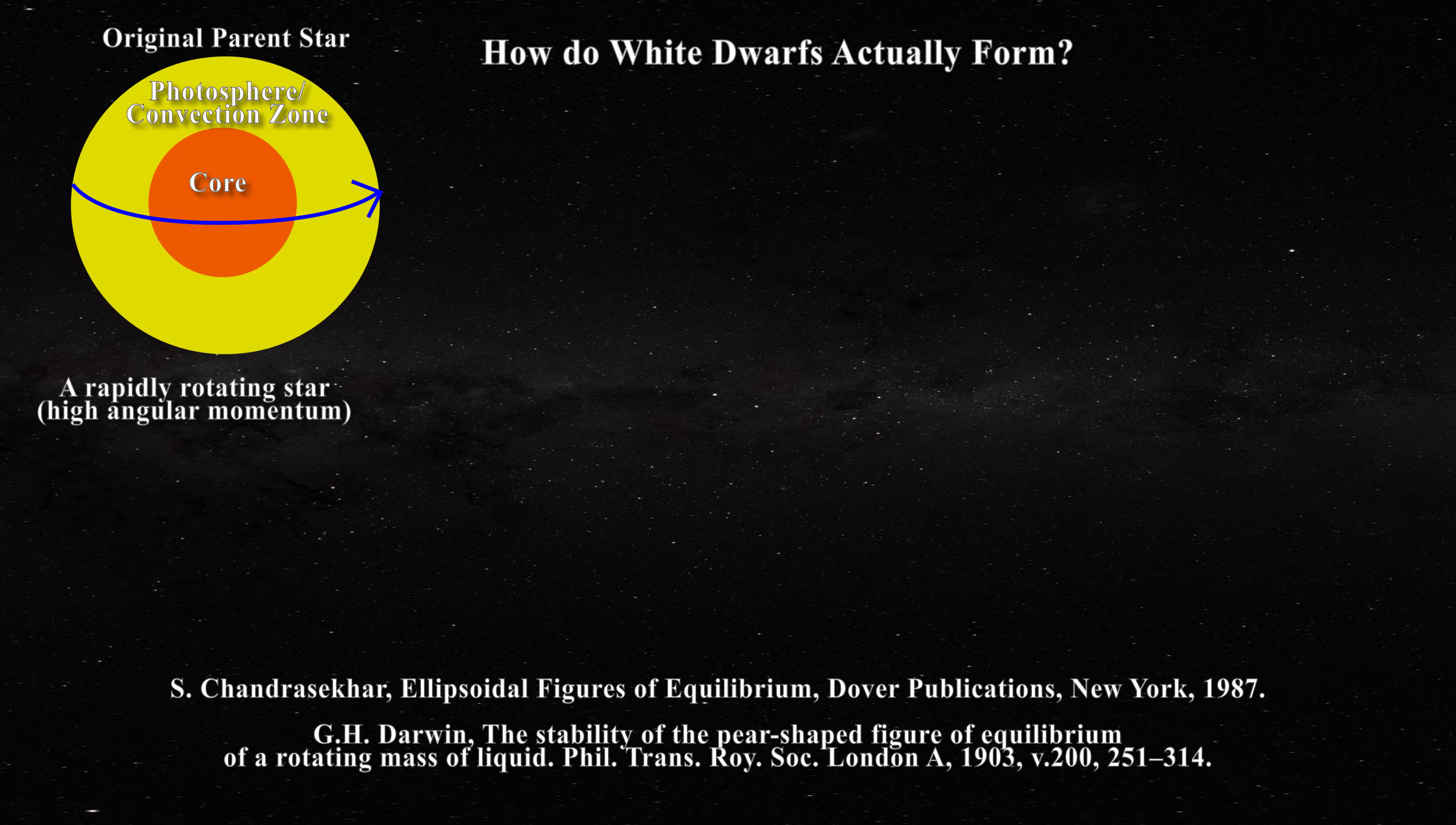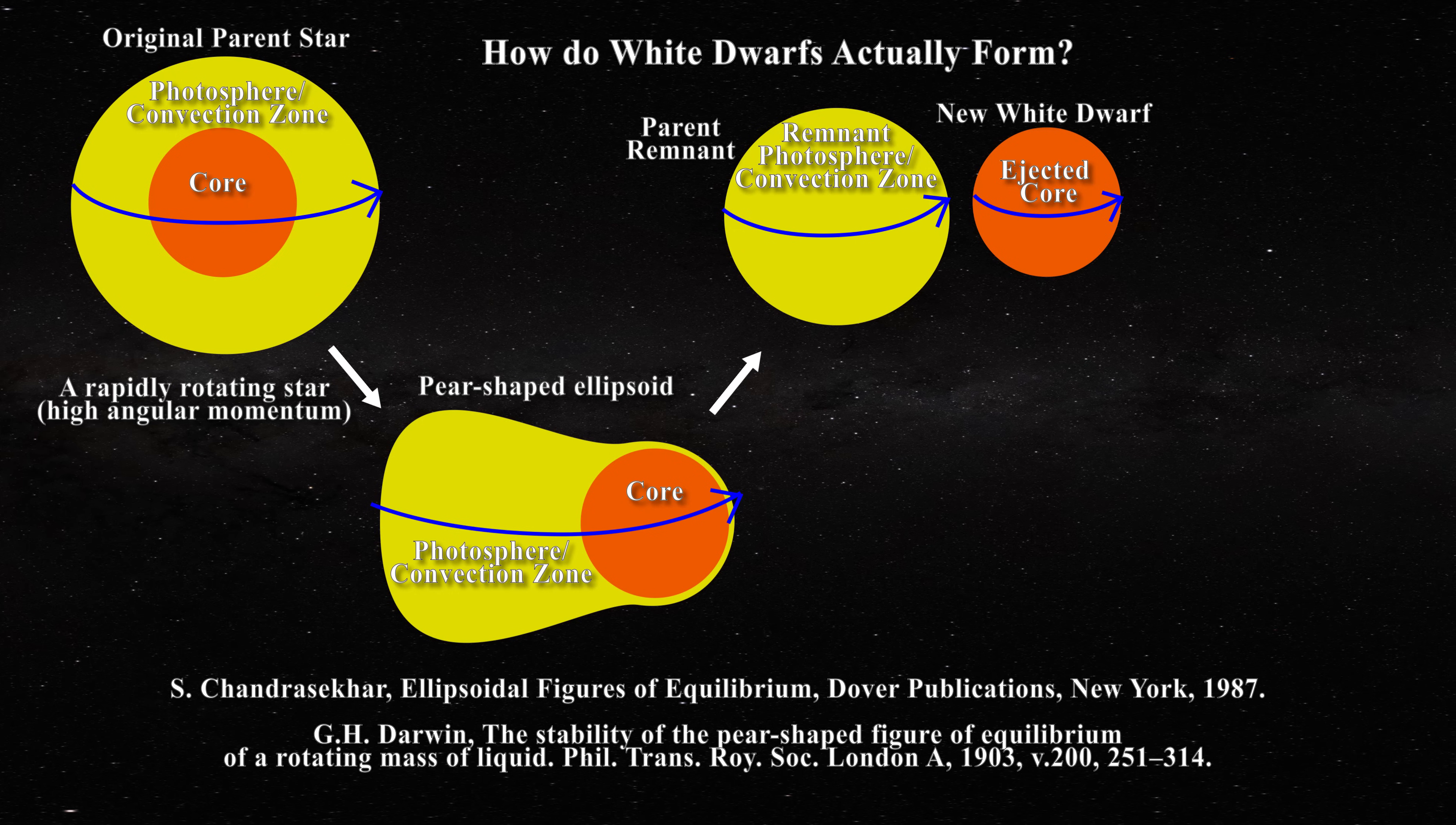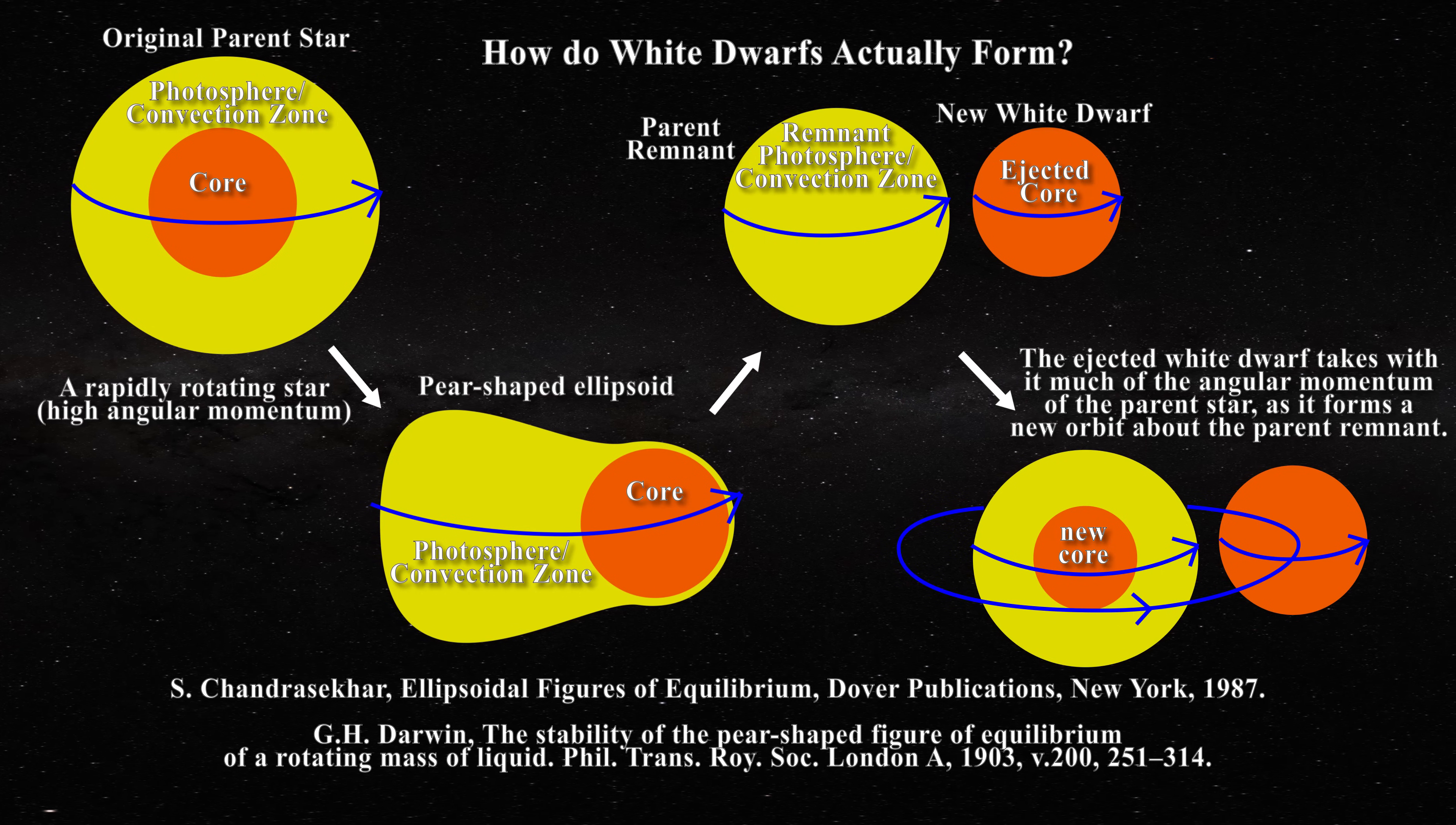When a large liquid star rotates, it can become pear-shaped, as seen here. If during rapid rotation the core of the star is displaced from the center, then fission of the pear configuration could result in two stars. One would be the ejected core, a white dwarf, and the other would be a companion star which now has developed its own new core. Both objects would end up with very similar densities.